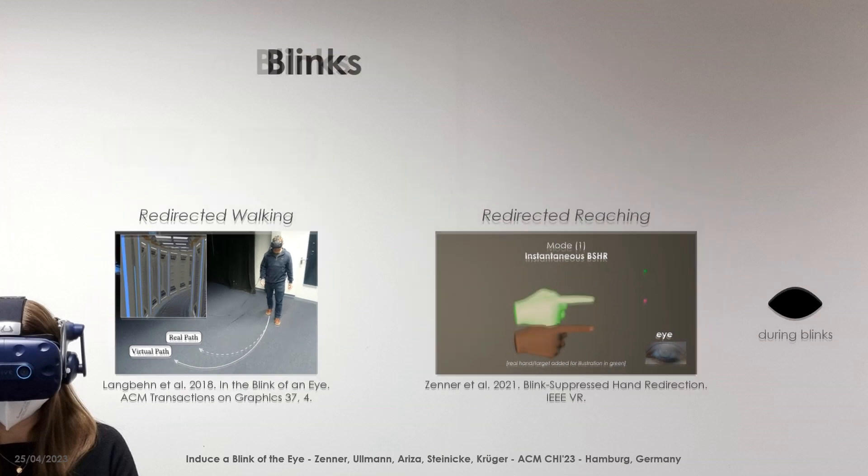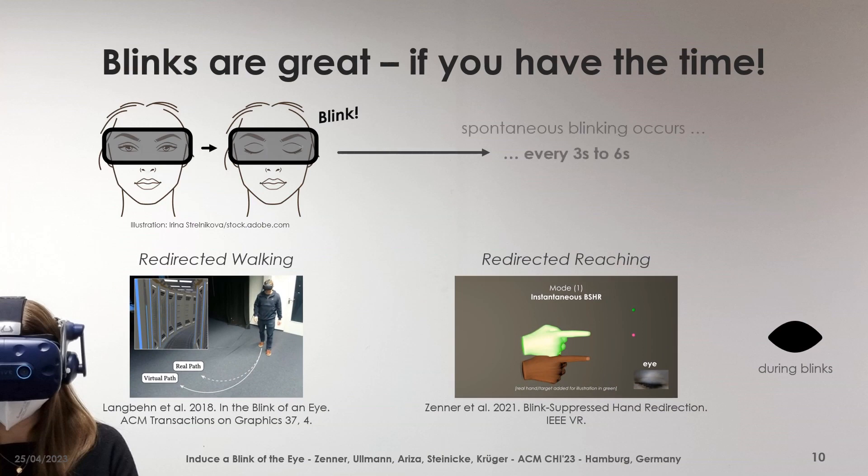Thus, blinks are a valuable tool for illusion techniques in VR as they provide opportunities for change blindness on a regular basis, on average every 3 to 6 seconds, which is great if enough time to wait for the next blink is available. But what if blinks are required within short-time windows, for example when blinks are used for redirected reaching, where interactions only take up to 2 seconds?